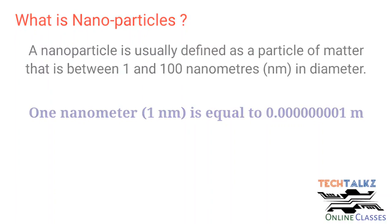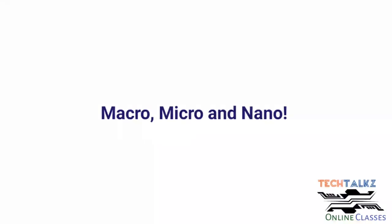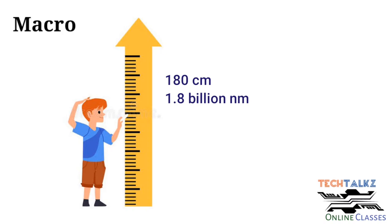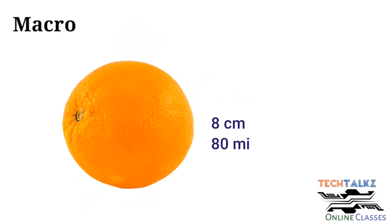In order to understand the nanoscale, let us have a comparison between macro, micro and nanoscale. Let us take some examples for macro. The height of an average person will be around 180 centimeters, which is equal to 1.8 billion nanometer. Then an orange, which is a size of 8 centimeters, equals 80 million nanometer.